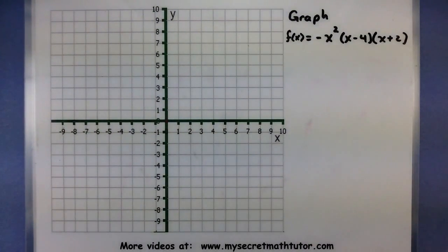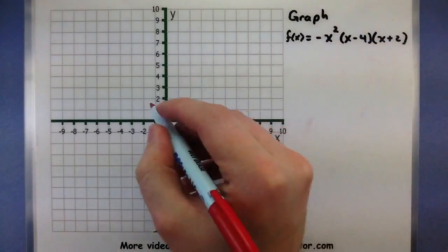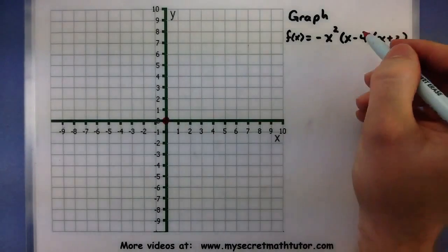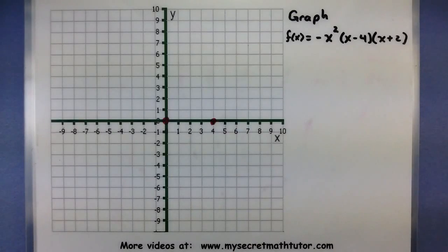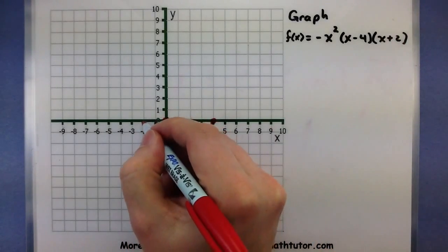So each of these factors I want to figure out where it is equal to 0. So this first one is equal to 0 when x is equal to 0. So I have that point right there. x minus 4 is equal to 0 when x equals 4. We have that. And let's see, when x equals a negative 2, this last factor will equal 0.